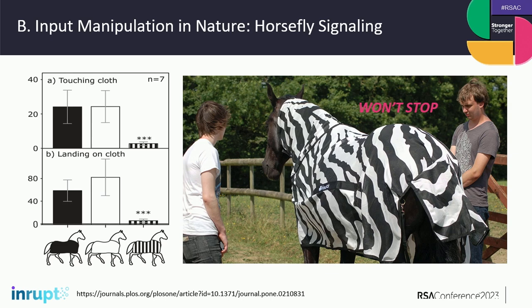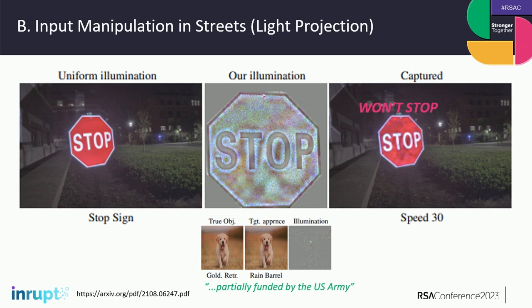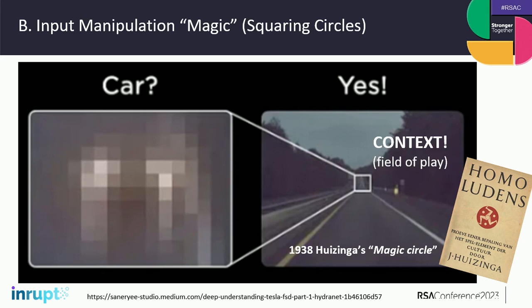Input manipulation: zebra stripes are actually a way of preventing flies from landing — latest research shows if you put zebra stripes on horses, flies stop biting them. Why does that matter? In our world, if I put some stripes on a stop sign, cars with cameras can't see the stop sign. Even better: if I use a projector — even from across the street — all the cars stop stopping at that sign; they just can't see it. And guess who funds this? The US Army, because if you can turn a golden retriever into a rain barrel, you disappear. That's very useful militarily.